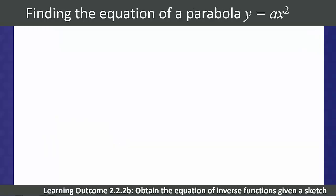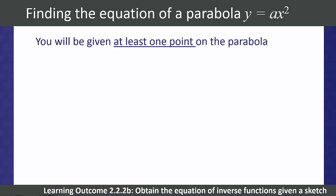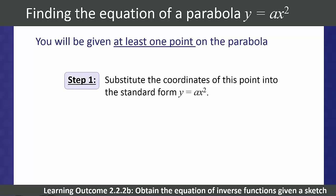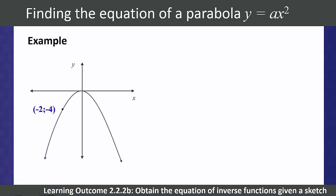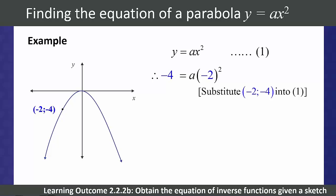Finding the equation of a parabola in the form y equals ax squared: students will always be given at least one point on the parabola. Substitute this point into y equals ax squared and solve for a. For example, given the point (-2, -4), substituting gives a equals -1, so the equation for this parabola is y equals negative x squared.